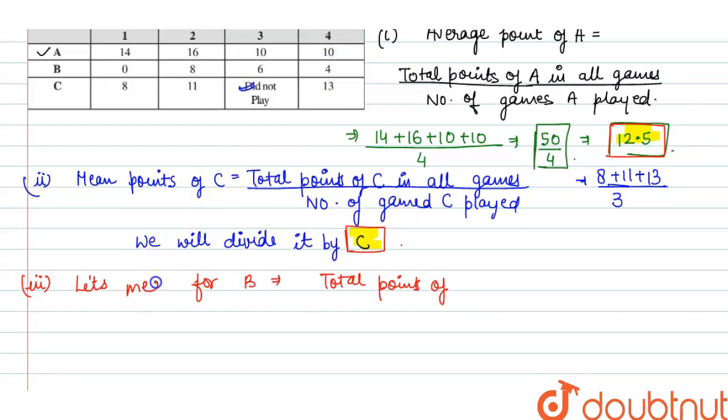We have to find mean. Total points of B divided by number of games B played. Now it is 4. We will take the B values: 0 plus 8 plus 6 plus 4 divided by total he played 4.